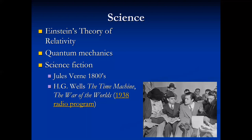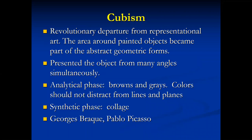Cubism was a revolutionary departure from representational art. The area around painted objects became part of the abstract geometric forms. Cubists presented the object from many angles simultaneously. In the analytical phase, only browns and grays were used so the colors didn't distract from the lines and planes. In the next phase, the synthetic phase, cubists used the technique of collage. Georges Braque and Pablo Picasso are the most well-known cubists.